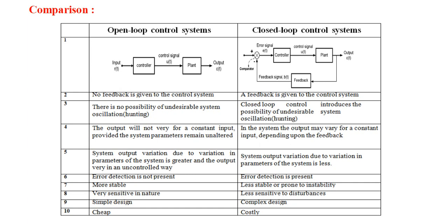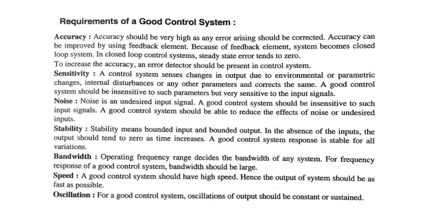The design of an open-loop control system is very simple, while the closed-loop control system design is complex. The cost of an open-loop control system is very less compared to a closed-loop control system — so the open-loop system is cheap and the closed-loop control system is costly. That is the basic comparison between open-loop and closed-loop control system.